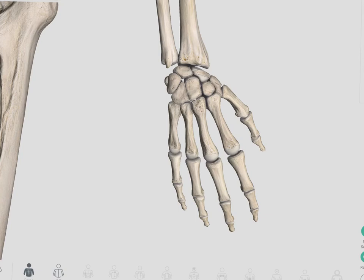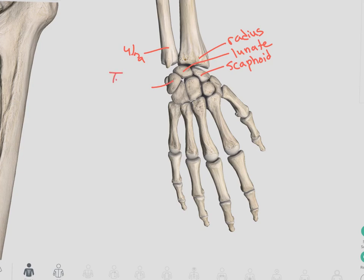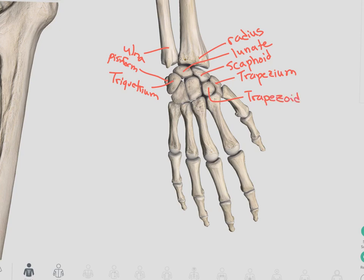Looking again at the wrist only from the posterior side — identify your radius on the thumb side and your ulna, then remember our acronym. Starting with our S in the proximal row on the thumb side: here we have our scaphoid. In the middle, we have our lunate. And then on the far side, we have our triquetrum, and you can barely see the pisiform in front of it. Then we move back to the thumb side for the distal row. We have our trapezium — because it comes before trapezoid in the alphabet — then trapezoid, then our capitate, and our hamate.